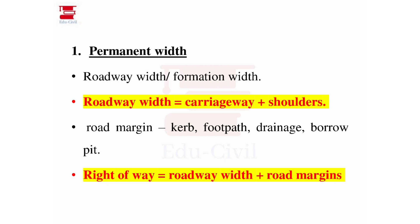What is the road margin? It could comprise a curb, a footpath, drainage, and elements from the embankment. So: the roadway equals carriageway plus shoulders; the right-of-way equals roadway plus road margin; and road margin includes curb, footpath, and drainage.